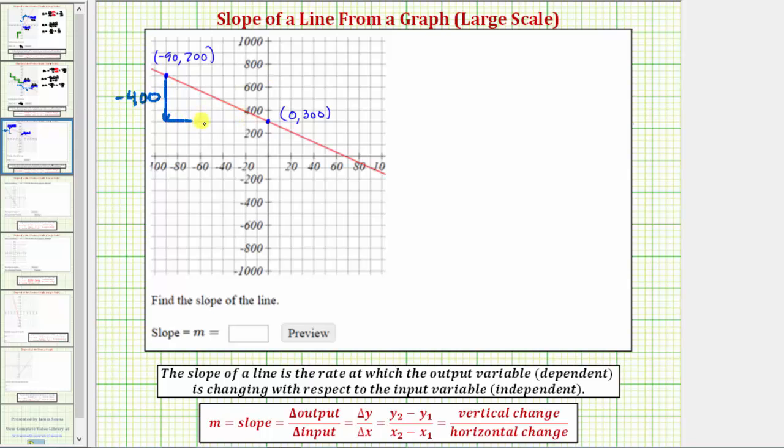And from here, we have to go right, again, being careful about the scale. There's a tick mark every 20 units, and therefore each grid mark is 10 units. So we have to go right 90 units, and therefore the horizontal change is positive 90. If we were to go left, the horizontal change would be negative.